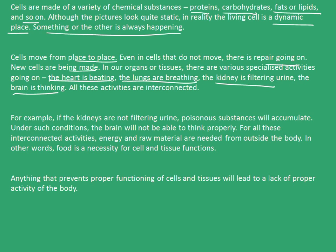Now suppose one of the activities starts to malfunction. For example, if the kidneys are not filtering urine, the poisonous substances will accumulate inside the body. Under such conditions, the brain will not be able to think properly. For all these interconnected activities, therefore, energy and raw material are needed from outside the body. In other words, food is necessary for cell and tissue functions. So anything that prevents proper functioning of cells and tissues will lead to lack of proper activity of the body.